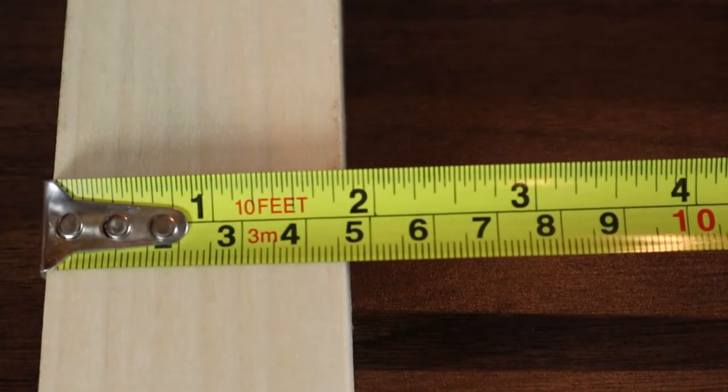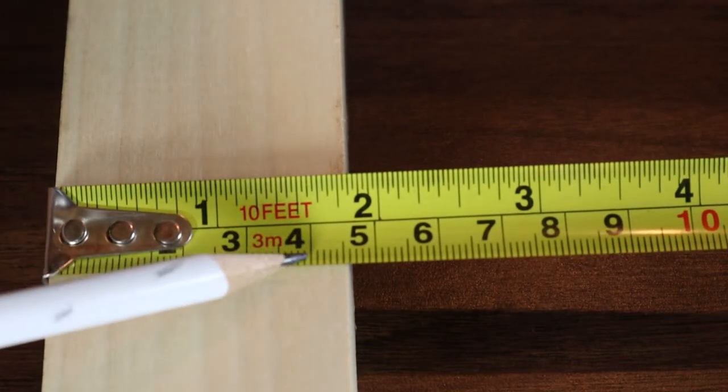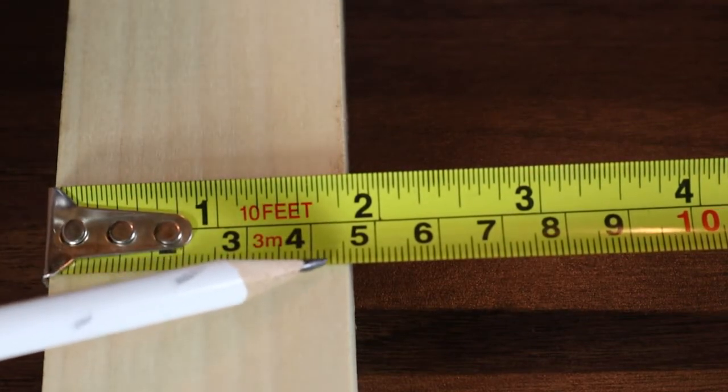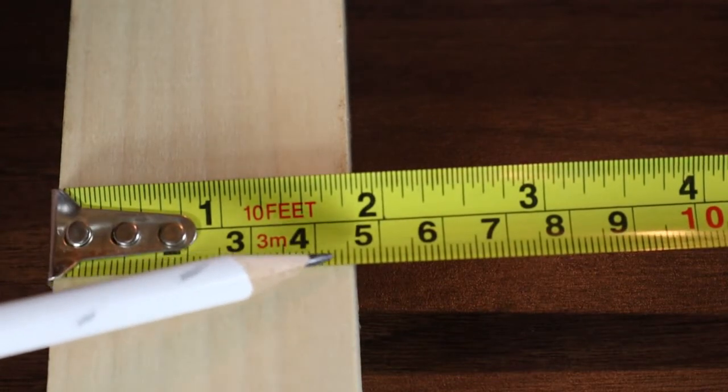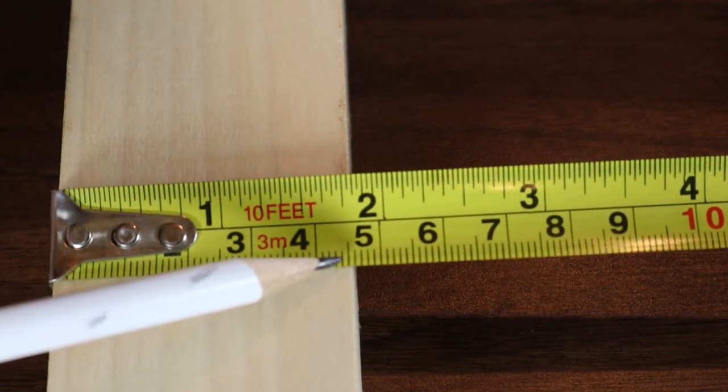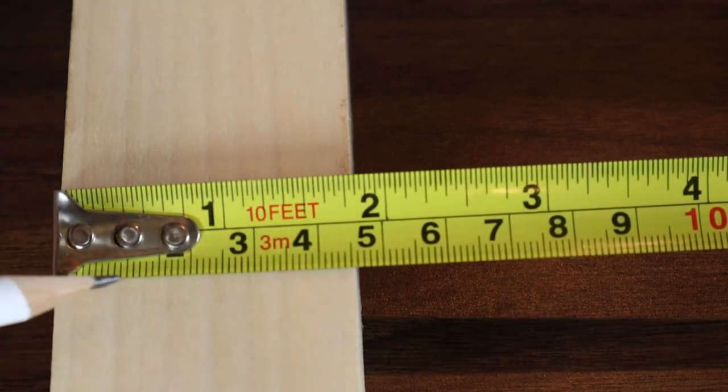Another quick example measuring across this piece of wood here, you come across one, two, three, four centimeters plus one, two, three, four millimeters, so that's going to be 4.4 centimeters, or like I said, you times that up by 10, you've got 44 millimeters.